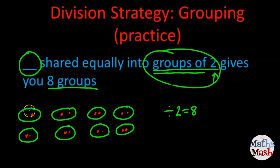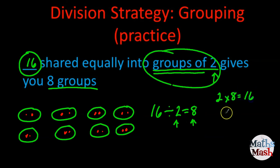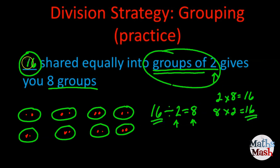Our divisor is two and our quotient is eight. So counting up: two, four, six, eight, ten, twelve, fourteen, sixteen. 16 is our answer. And I multiply two and eight to check my work, and you can see that 16 comes up again. So we've done that correctly.